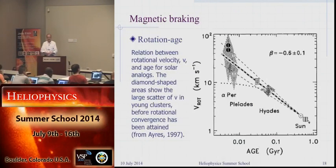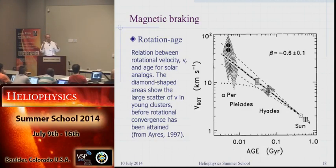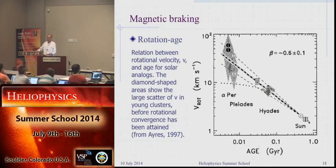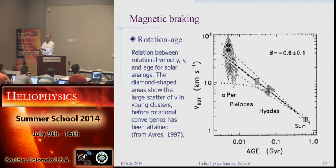The Skumanich law—Andy Skumanich in the audience yesterday, though not today—shows stars slowing down over time. Young stars are in the fast part of the diagram. There's a big range in rotation rates among young stars, but that range converges to a narrow distribution at older ages. This tells us dynamos are nonlinear and angular momentum loss is a nonlinear process—so rotation converges to nearly the same pattern for all sun-like stars at solar age, except in binaries.